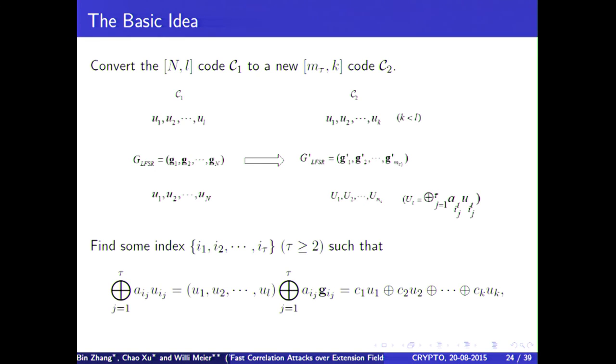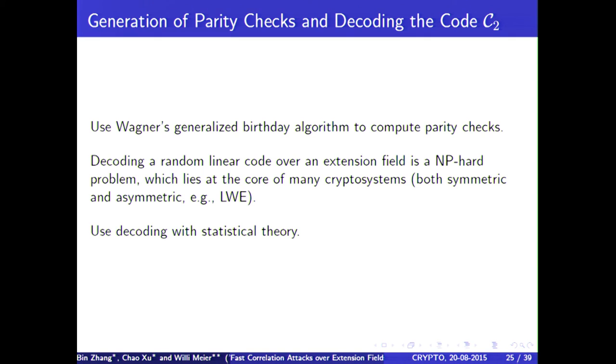Usually this number of columns to be combined is relatively small. A good guess for ordinary correlation attacks was 4, and interestingly here, it's much the same here. If I express this in this formula, this idea, it looks a bit technical, but it's just this idea which I have described in words. To find such good linear combinations, we use Wagner's generalized birthday algorithm to compute the parity checks. We know that decoding a random linear code over an extension field is NP-hard problem, but it lies at the core of many cryptosystems, both symmetric and asymmetric, for example, also LWE. We use decoding with statistical theory.